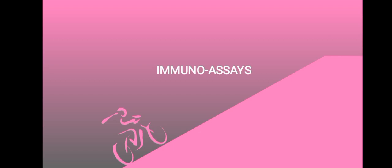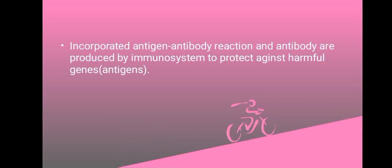In today's session, we are going to look at immunoassays and we are going to begin with a brief introduction. Immunoassays refers to incorporated antigen-antibody reactions, and antibodies are produced by the immune system to protect against harmful germs — in this case, the antigens. The basis of immunoassays is the ABO blood grouping system, which is performed to determine an individual's blood group and is based on the fact that individuals have antigens on their red blood cells that correspond to the four blood groups: A, B, O, and AB.